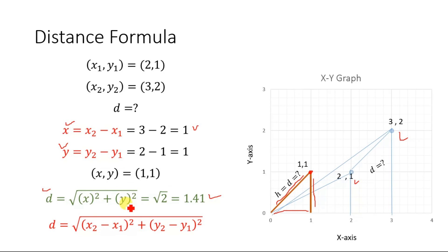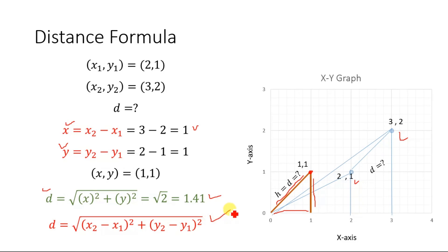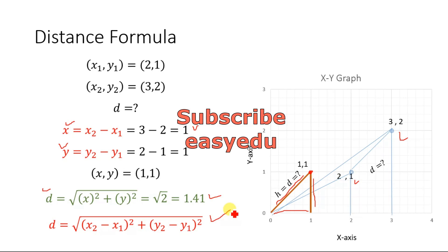Now in the equation d equals the square root of x squared plus y squared, substituting the values of x and y, we get d equals the square root of (x2 minus x1) whole square plus (y2 minus y1) whole square. And this is the distance formula. Thank you for watching, and don't forget to subscribe for more videos.